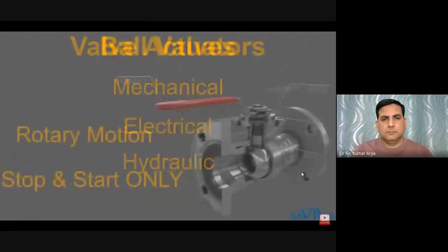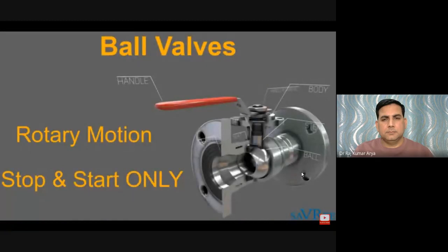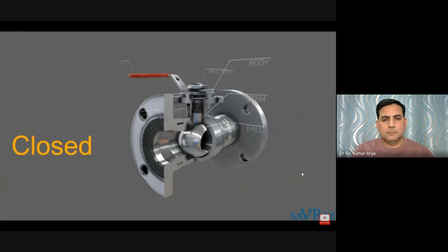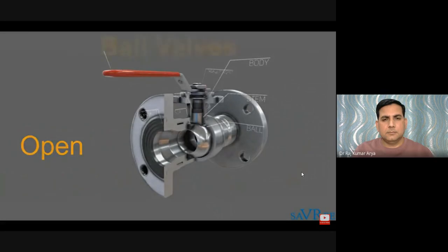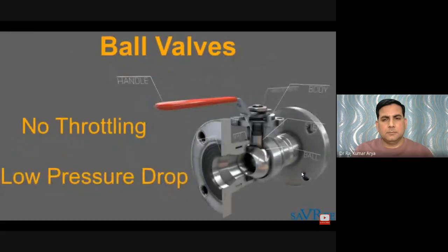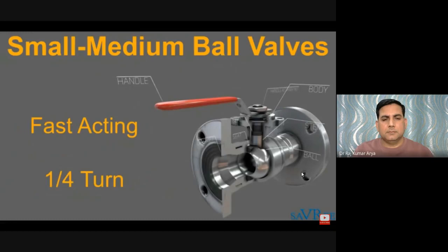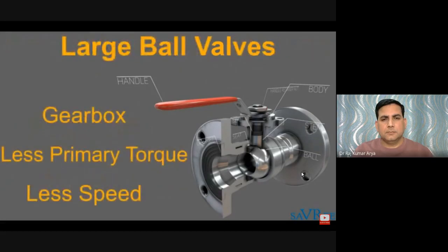A ball valve is a rotary motion valve that uses a ball-shaped disc to stop or start flow. When the handle is turned to open, the hole through the ball aligns with the valve inlet and outlet. When shut, the ball is rotated so the hole is perpendicular to the flow opening, stopping flow. Ball valves are not suitable for throttling, and the pressure drop when fully open is very low. Small to medium-sized ball valves are fast-acting quarter-turn valves, while larger ball valves employ a planetary gearbox to allow operation with a smaller hand wheel.